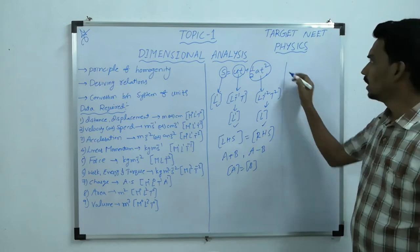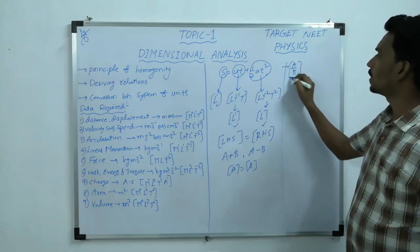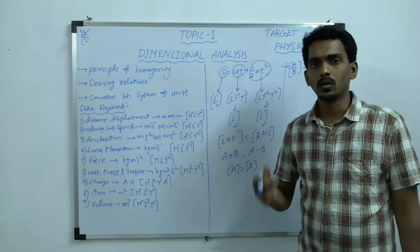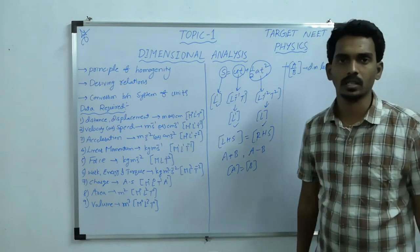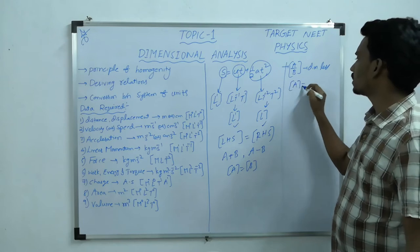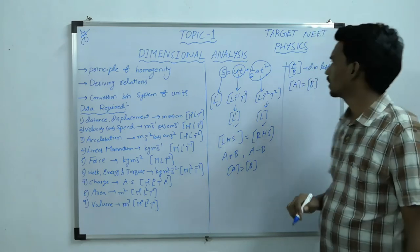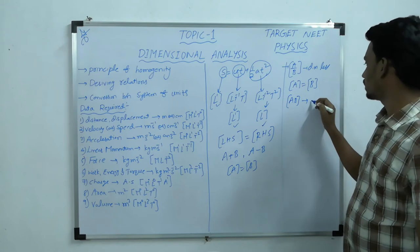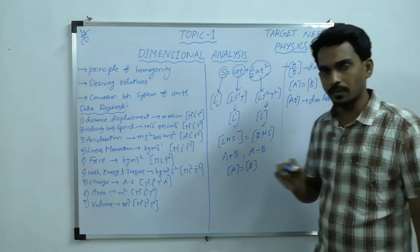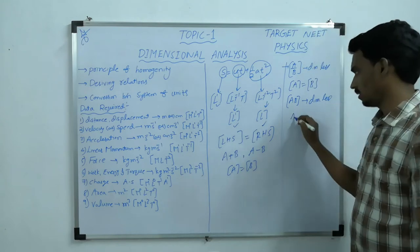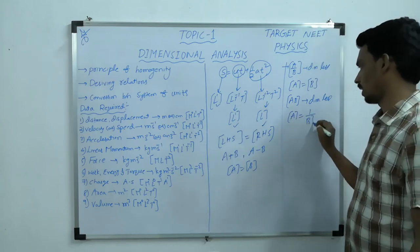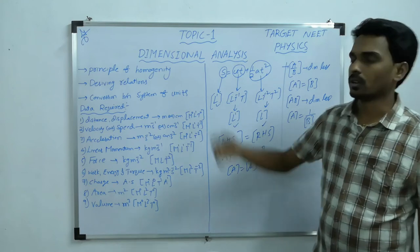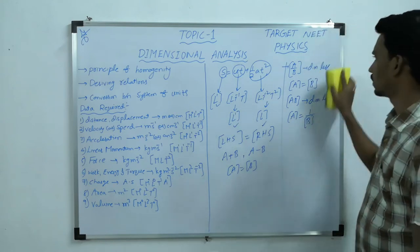Also remember: if a/b is dimensionless, then dimension of a must equal dimension of b. And if a·b is dimensionless — the product of a and b is dimensionless — then the dimension of a is the reciprocal of the dimension of b. Remember these two things; they will help in solving questions related to these three topics.